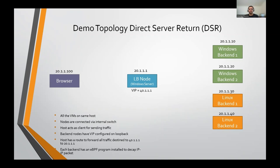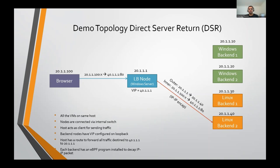This is how the packet flow looks in the DSR scenario: the browser sends a request packet to the LB node using source IP 21.1.100, some source port X, destined to 4.1.1.1 port 80. Once the LB node receives the packet, it chooses one of the back-end nodes, does IP-in-IP encapsulation, and forwards the request. The outer IP header has source IP 21.1.1 (the LB node) and destination 21.1.40 (the chosen back-end). The inner IP header is the original header from the browser. The back-end de-caps the packet, processes the request, and directly sends the response back to the browser without going through the LB node — this is DSR working in action.